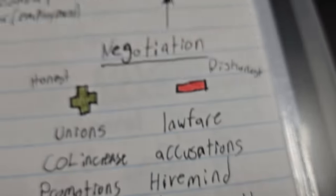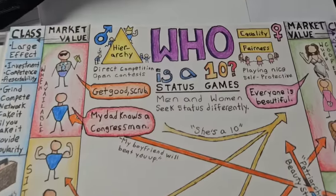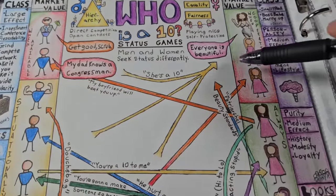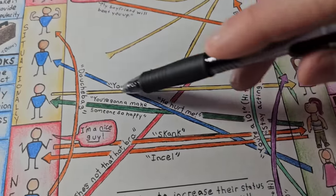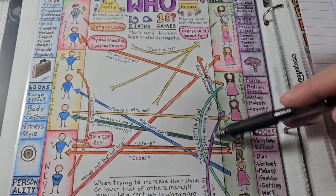So what is hive mind theory? It's a negotiation tactic. It's a dishonest one. I went over this in Who is a Ten. That would be a collective agreement to use accusations in order to gain political, institutional, and economic power.